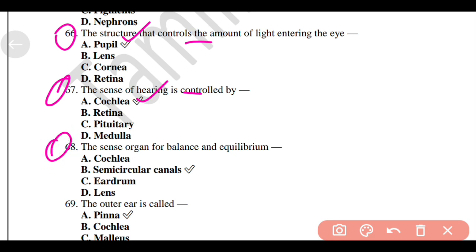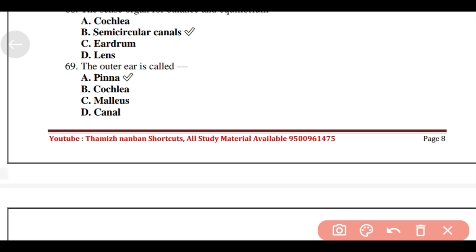The sense organ for balance and equilibrium, Option B, Semicircular Canals. The outer ear is called option A, Pinna.